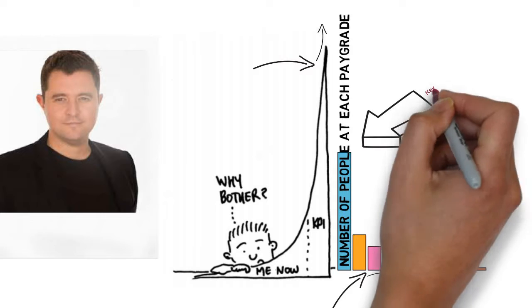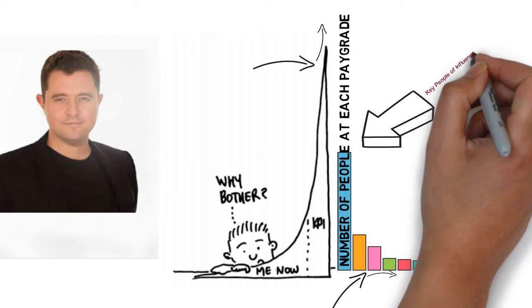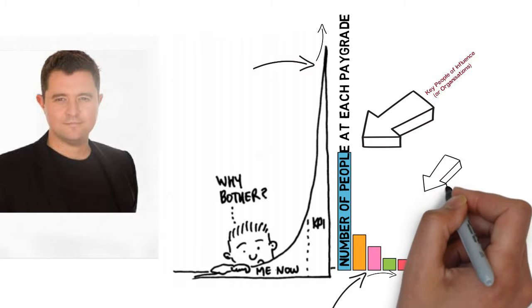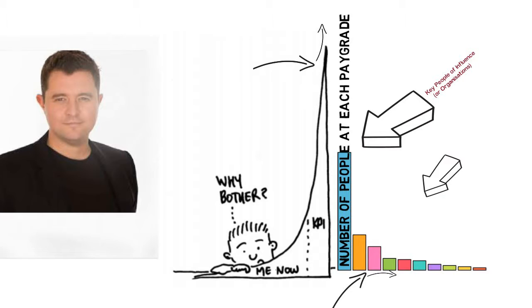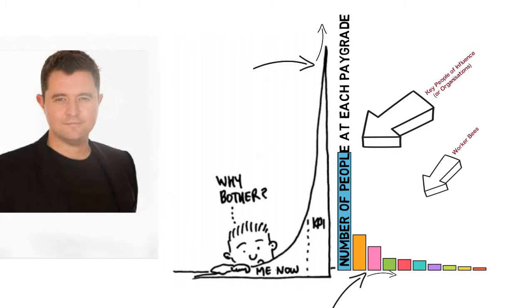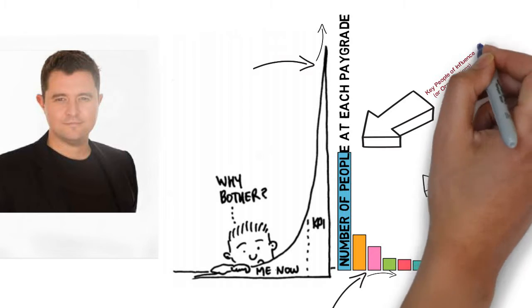Daniel Priestley splits the graph into three and describes these winners as key people of influence. In wider terms, they could also be key organizations. Those further out he describes as worker bees—these are individuals or companies that are able to make a living in the industry but are not at the top by any means. Beyond that are those which he terms the newbies, those that maybe have only just joined the industry and are probably not managing to cover all their bills.